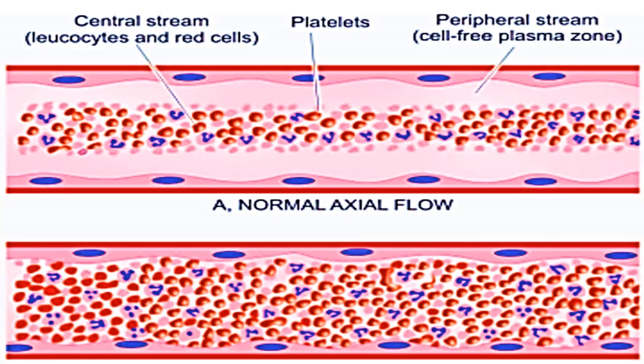This photograph shows the flow of blood. The formed elements of the blood — RBCs, WBCs, platelets — are in the central stream, whereas the peripheral stream, which is in contact with the endothelial cells, is plasma. This is called axial flow of blood.